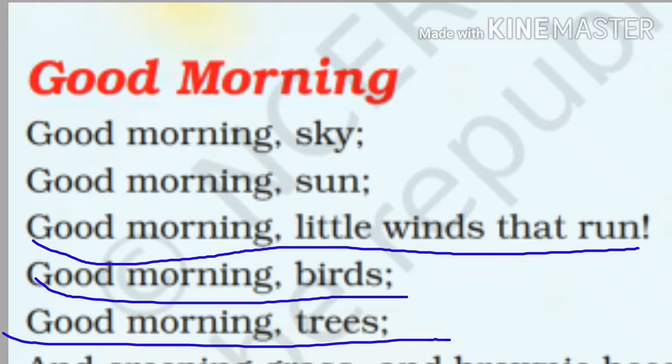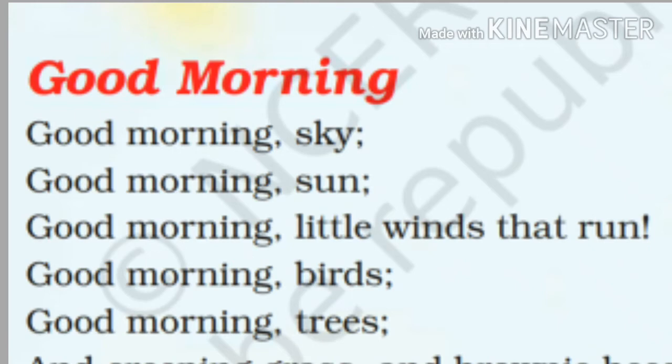The girl is in the morning and says good morning sky, then good morning sun, good morning little winds that run, good morning birds, good morning trees. The girl is saying good morning sky — aakash. Good morning sun — sun means sun. Good morning little winds that run. Good morning birds.